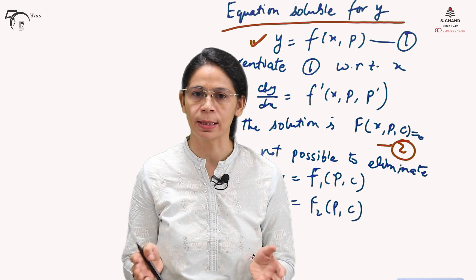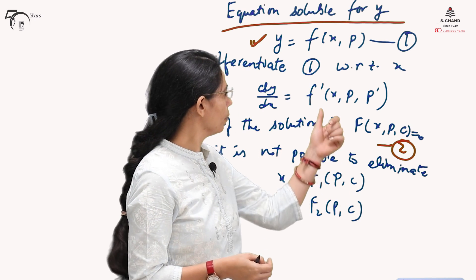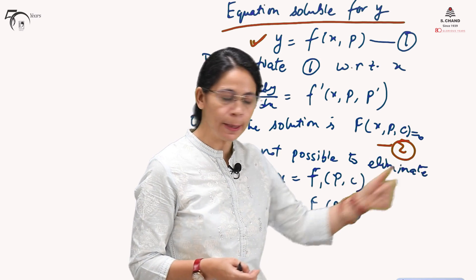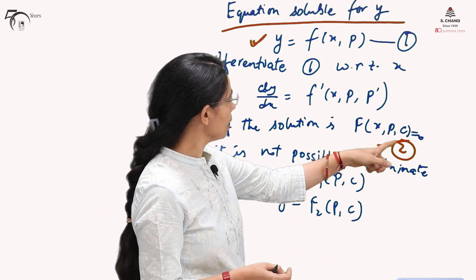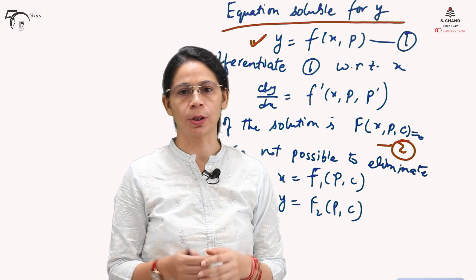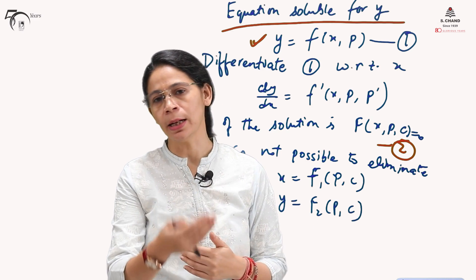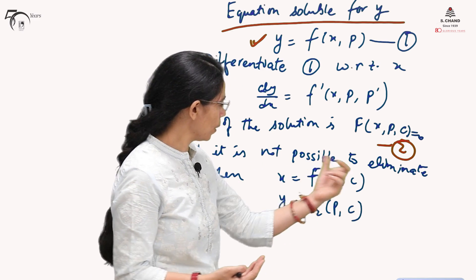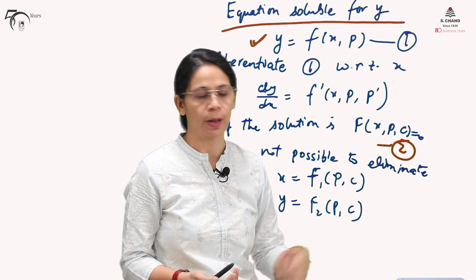This general solution involves an arbitrary constant. If it is not possible to eliminate p, then we will solve for x and y separately, writing x = f₁(p, c) and y = f₂(p, c), giving the solution in parametric form. The solution is the relation between the dependent and independent variables.